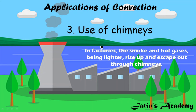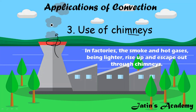The third application of convection is the use of chimneys. In big factories, smoke and hot gases are lighter, so they rise upward. Chimneys provide the path for these smoke particles to move upward and escape out of the factories.